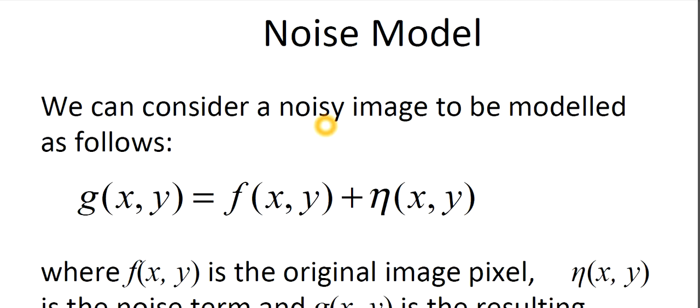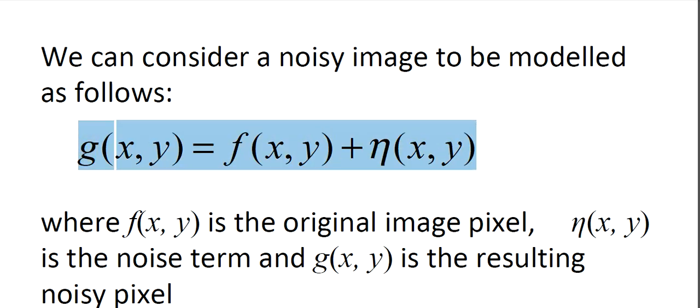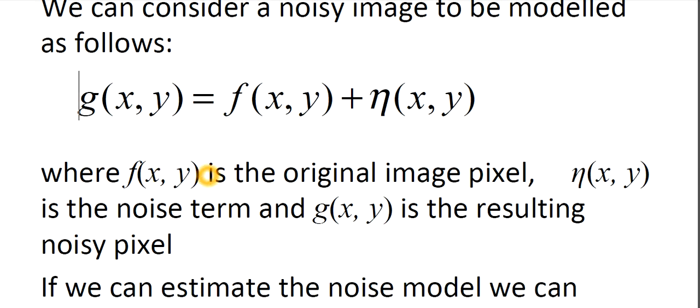We have different noise models. A noise model means we consider a noisy image to be modeled through it. Consider this equation: g(x,y) = f(x,y) + η(x,y), where f(x,y) is the original image pixel, η(x,y) is the noise term, and g(x,y) is the resulting noisy pixel. We are concerning every pixel because each pixel may be affected by the noise term individually.